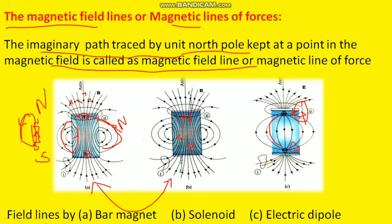Magnetic field lines go from North to South outside the magnet and from South to North inside, making them closed curves. Electric field lines are not closed — they are continuous, meaning there is no gap, but they do not form a closed loop. A magnetic field line is the imaginary path traced by a unit North Pole kept at a point in the magnetic field.